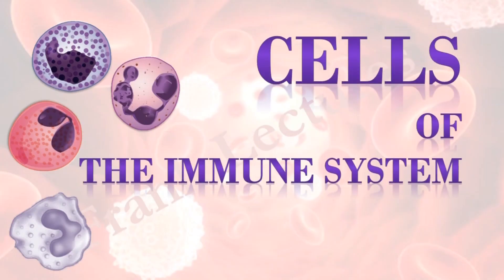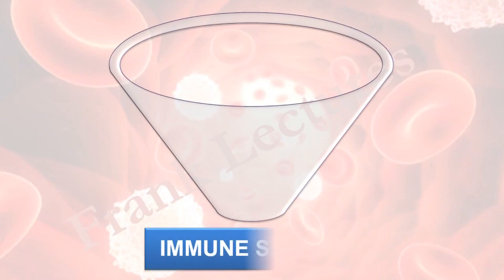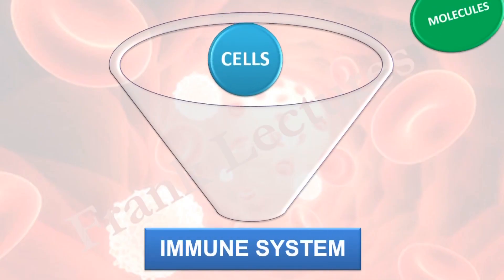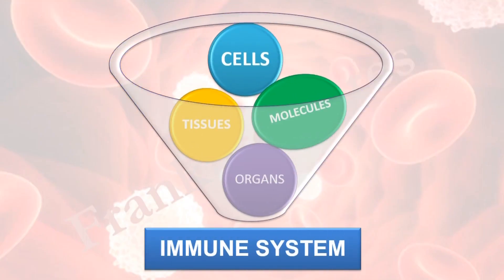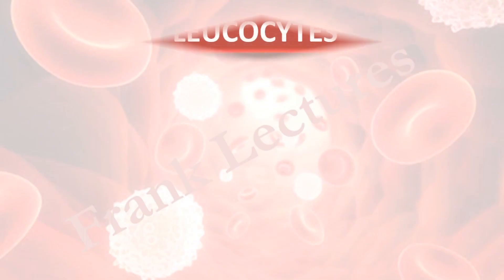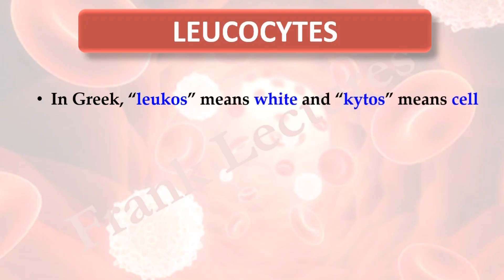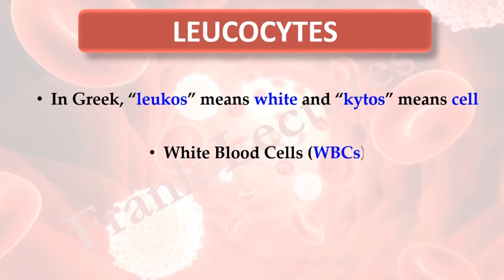Cells of the Immune System Part 1. Recall that our immune system is the collection of cells, molecules, tissues and organs. Let us now study cells of the immune system. Cells of the immune system are known as leukocytes. In Greek, leukose means white and chytose means cell. We know these cells as white blood cells, abbreviated as WBCs.